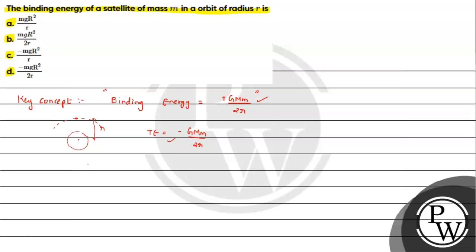Apart from this, we need to also know that the small g, that is acceleration due to gravity, can be written as GM upon R².